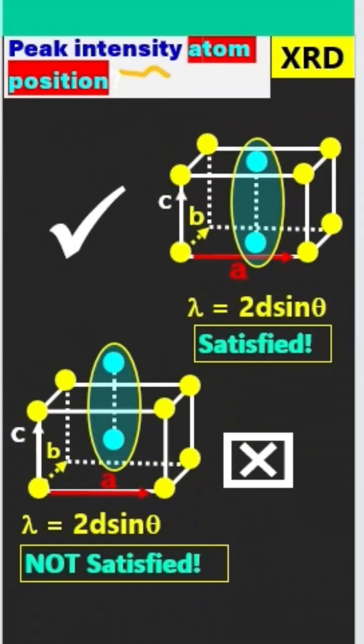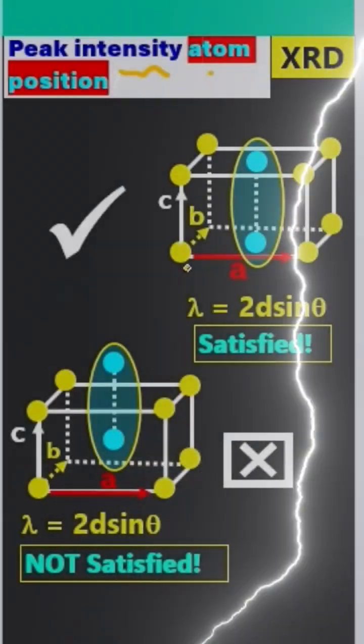In XRD, peak intensity depends on the atom positions. Look at these two unit cells.